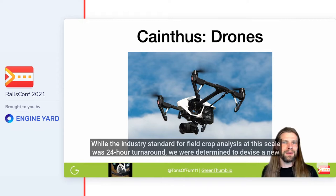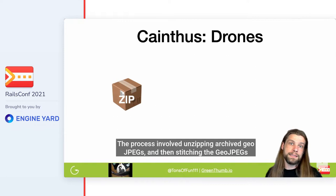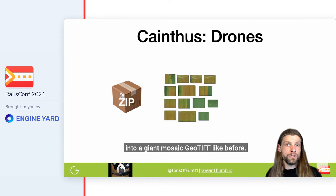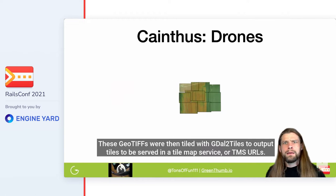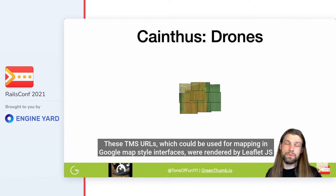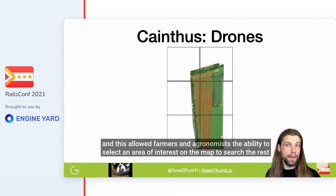While the industry standard for field crop analysis at this scale was 24-hour turnaround, we were determined to devise a new process for breaking up the work to make it more scalable and respond in under a second for a better user experience. The process involved unzipping archived GeoJPEGs and then stitching them into a giant mosaic GeoTIFF. These were gigabytes in size, but this was only happening once when the flight data was imported. These GeoTIFFs were then tiled with gdal2tiles to output tiles served as TMS URLs, which could be used for mapping in Google Map-style interfaces rendered by Leaflet.js, allowing farmers and agronomists to select an area of interest on the map to search the rest of the field for similarity.